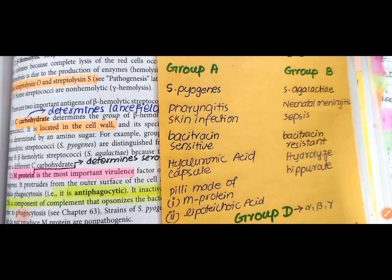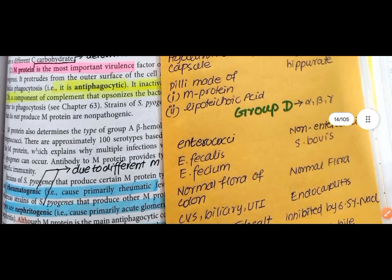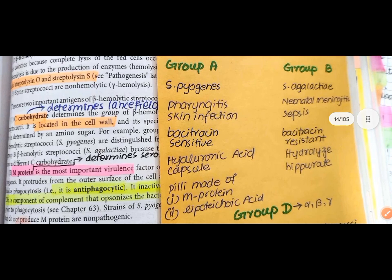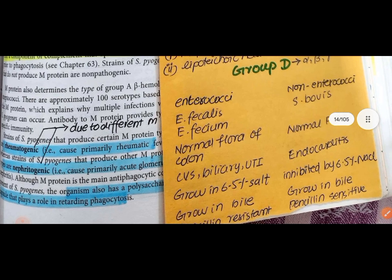Summary table: Group A S. pyogenes causes pharyngitis and skin infections; it is Bacitracin sensitive and has hyaluronic acid capsule, M protein, and lipoteichoic acid. Group B S. agalactiae is Bacitracin resistant and causes neonatal meningitis and sepsis; it hydrolyzes hippurate. Group D includes enterococci (E. fecalis, E. faecium) which are normal flora of the colon and can cause CVS, biliary, and urinary tract infections. Enterococci grow in bile, are penicillin resistant, and some are vancomycin resistant (VRE). Non-enterococcus S. bovis causes endocarditis, grows in bile, and is penicillin sensitive.